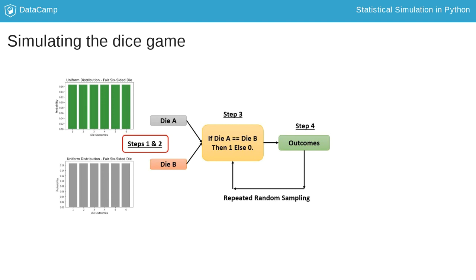Thus, seeing 1 and 4 is a loss, while 3 and 3 is a win. Let's see what we need for this simulation.